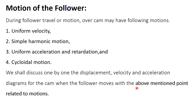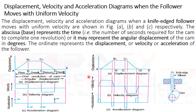We will discuss the displacement, velocity, and acceleration diagrams when the follower moves with the above-mentioned types of motions. The first is when the follower moves with uniform velocity. The displacement, velocity, and acceleration diagrams of a knife-edge follower are shown in figures A, B, and C.